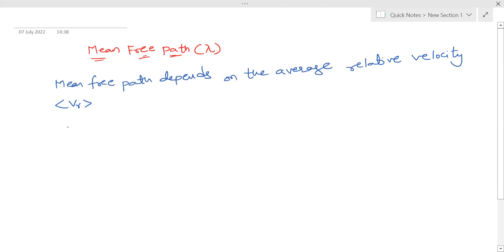So here this vr is nothing but v1 minus v2, that is, two molecules are involved in this. Now v1 and v2 represent the two molecules one and two.